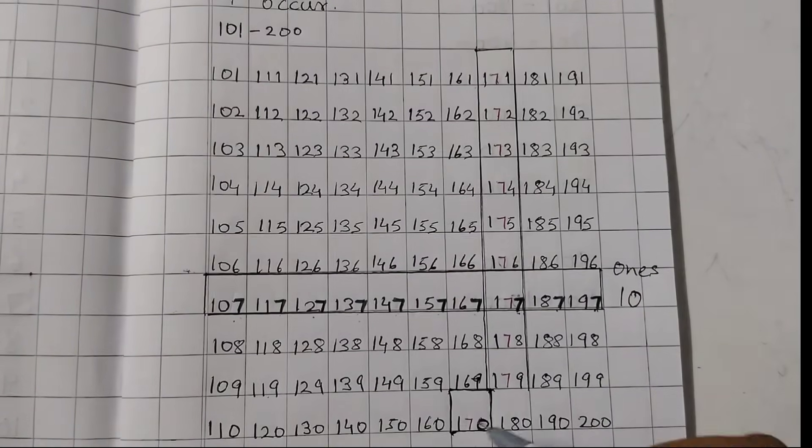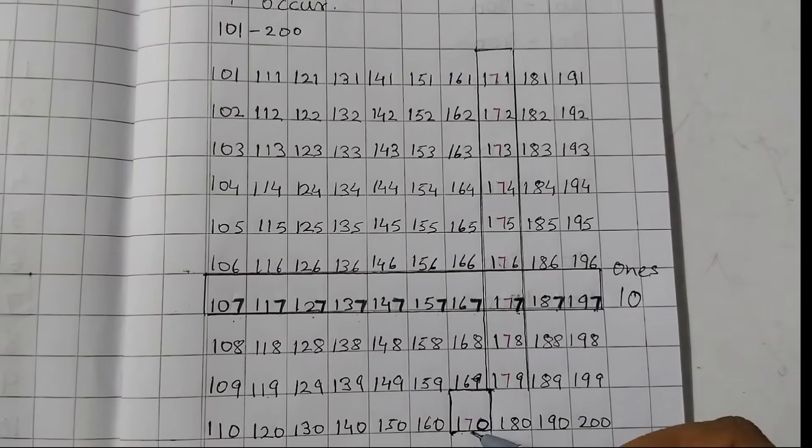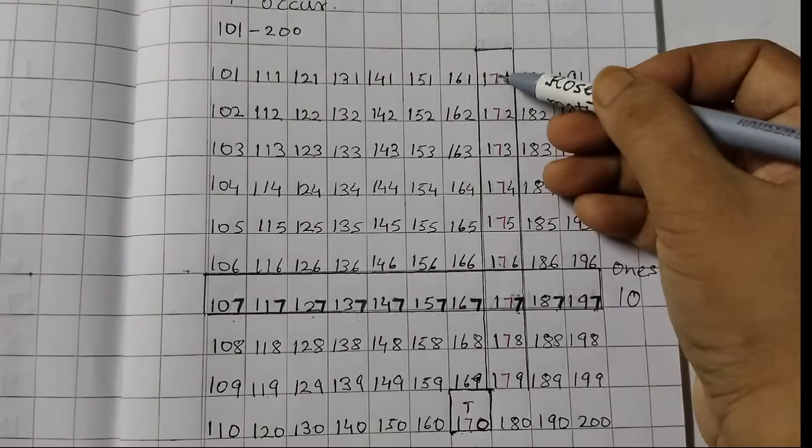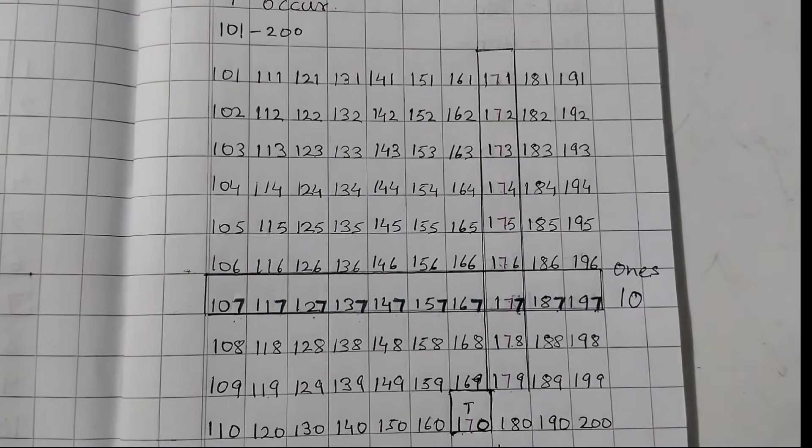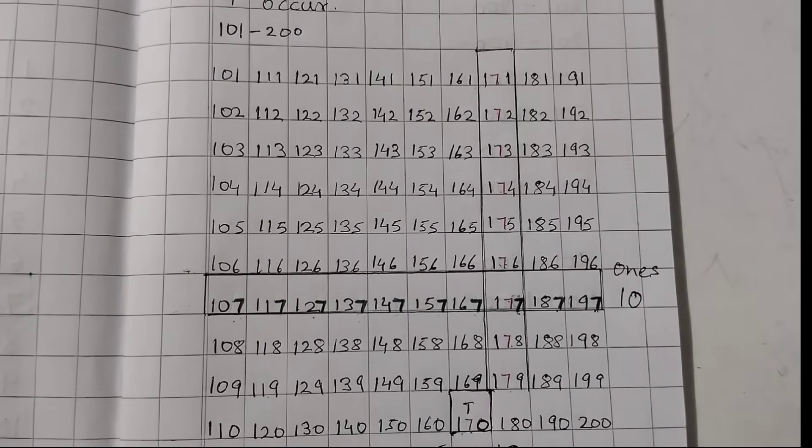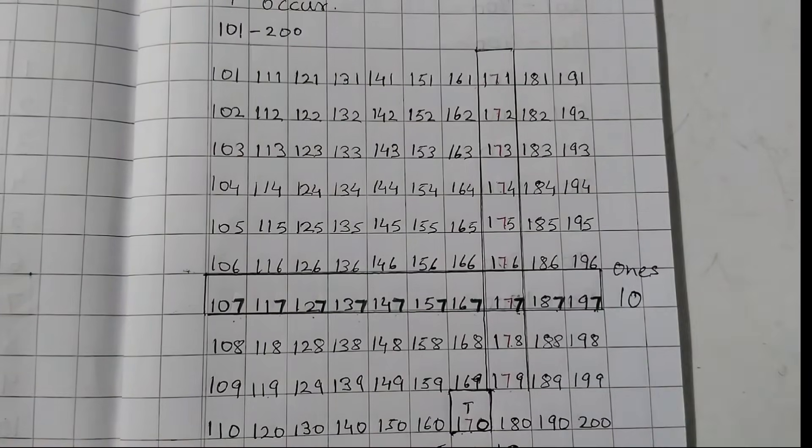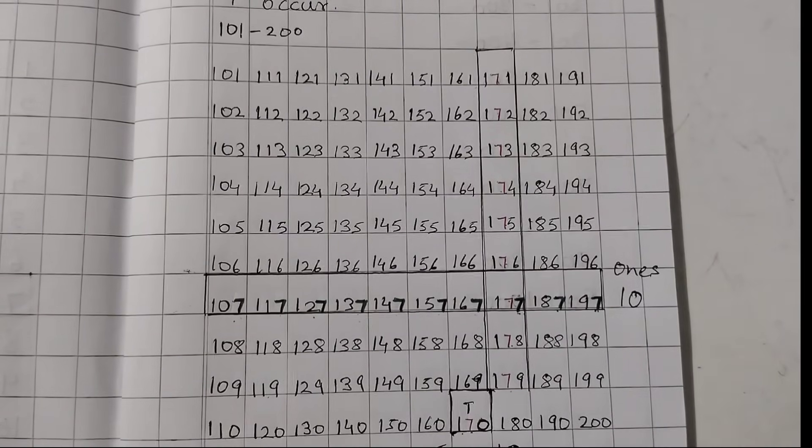And now, we will see the tens place. So, here we see 170. This is tens place, right? So, 1, 2, 3, 4, 5, 6, 7, 8, 9, 10. So again, it's 10 and 10. This is tens place and ones place. So 10 plus 10 equals 20. Again, it would be 20. So, we are going to write this now.